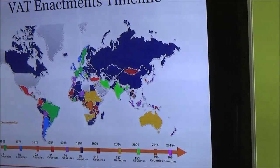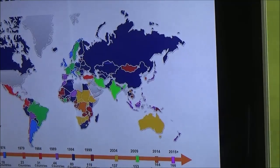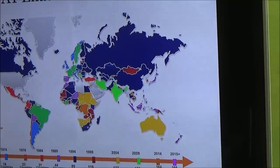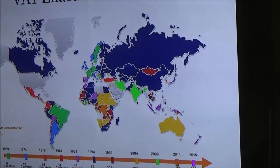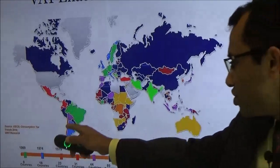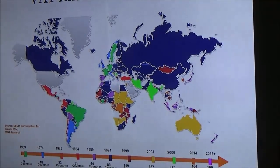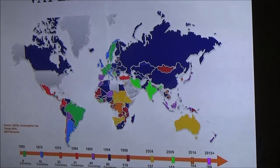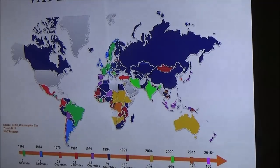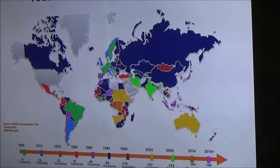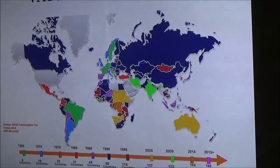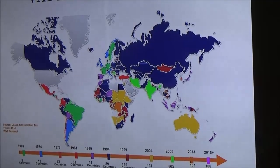VAT enactments timeline: VAT was implemented in 9 countries by 1969. By 1999, around 119 countries had implemented VAT. By 2014, 164 countries; by 2015, 166 countries. The latest update from last year, 2016, is that Egypt also implemented VAT.